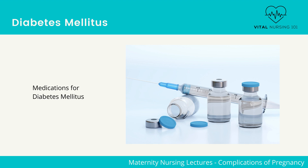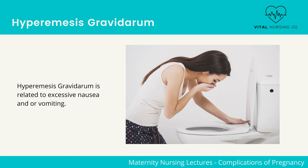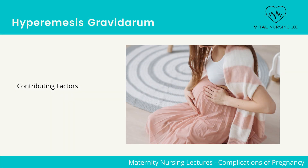That's it for the diabetes mellitus review. Next, we are going to cover hyperemesis gravidarum. Hyperemesis gravidarum is related to excessive nausea and/or vomiting. Hospitalization may be necessary because of dehydration and weight loss. It begins in the first and second month of pregnancy. The main contributing factors are high levels of human chorionic gonadotropin and estrogen, which lead to decreased gastric motility and gastroesophageal reflux.